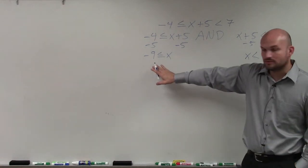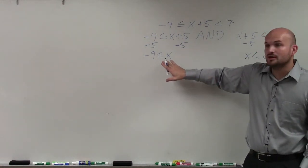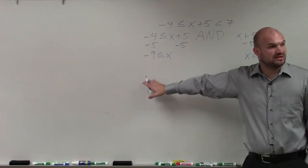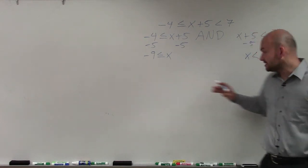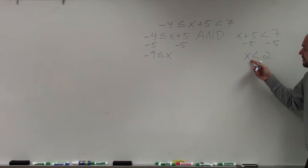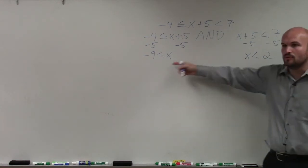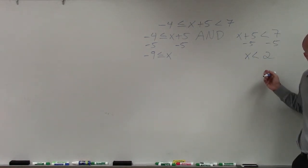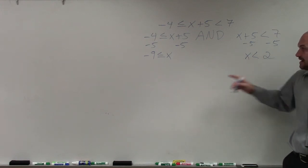Now, again, as we spoke about, usually we like to write the variable always on the left-hand side. Right? Because some people like saying, oh, the variable's on the left-hand side. Just shoot the arrow where the inequality symbol is. Right? Well, that only works when your variable's on the left-hand side.